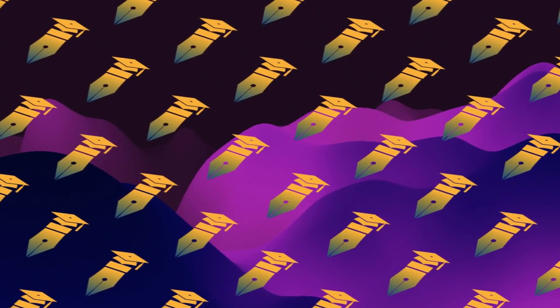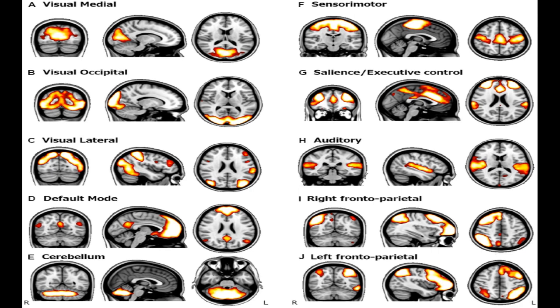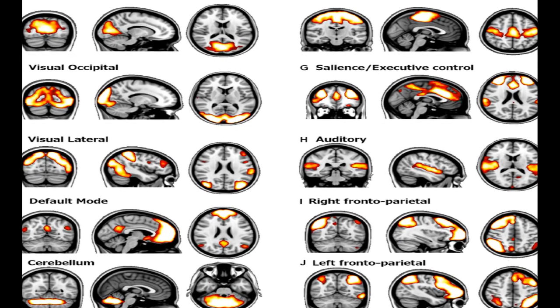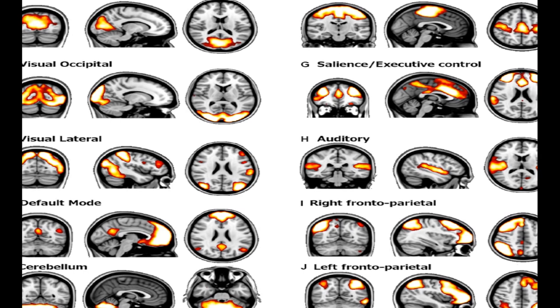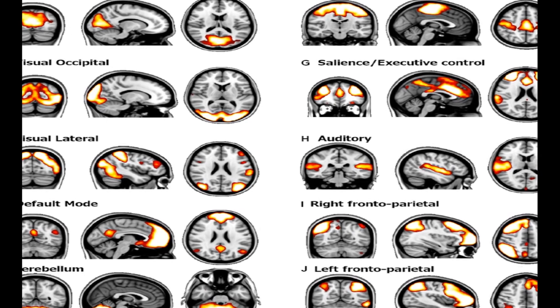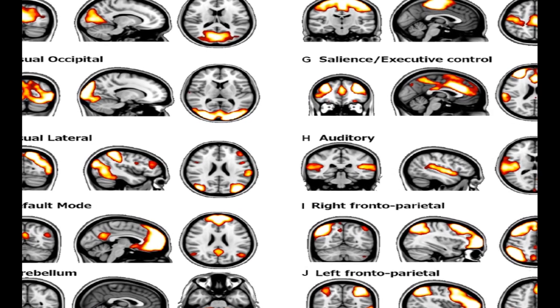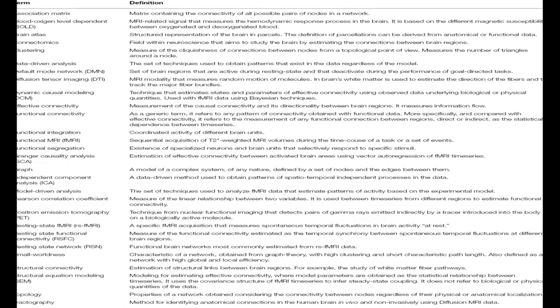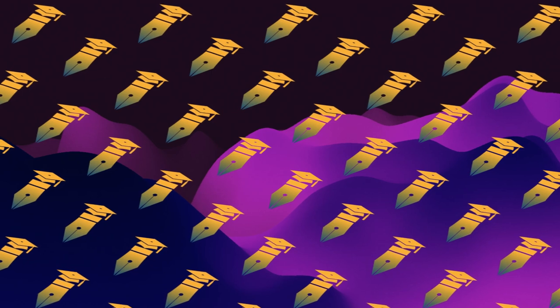A consistent finding in the fMRI literature is that healthy older adults present higher activity levels in some brain regions during the performance of cognitive tasks, which is usually interpreted as a compensatory mechanism. More recent approaches have focused on the study of functional connectivity, mainly derived from resting state fMRI, and have concluded that the higher levels of activity coexist with disrupted connectivity.